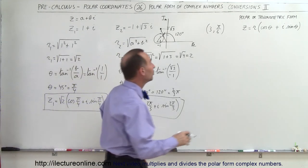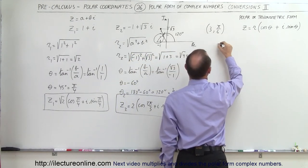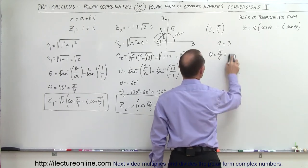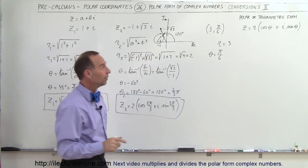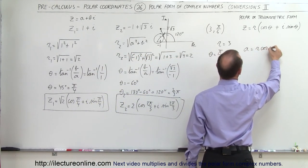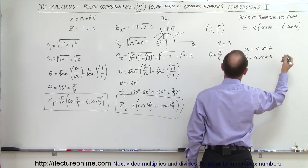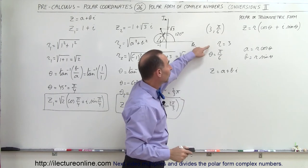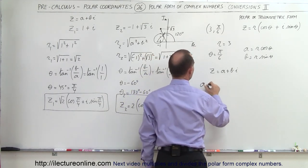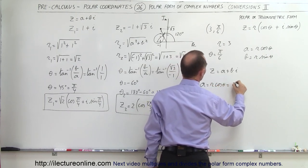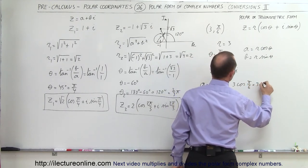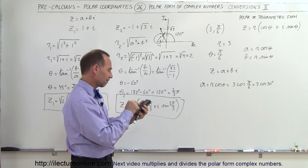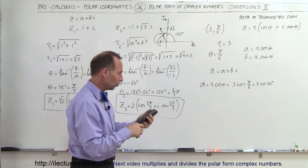Finally, let's convert from polar form back to a complex number. Suppose r equals 3 and theta equals pi over 6. Recall that a equals r times cosine of theta and b equals r times sine of theta. To find a: a equals 3 times cosine of pi over 6, which is 3 times cosine of 30 degrees. Cosine of 30 degrees is approximately 0.866, so a equals approximately 2.6.